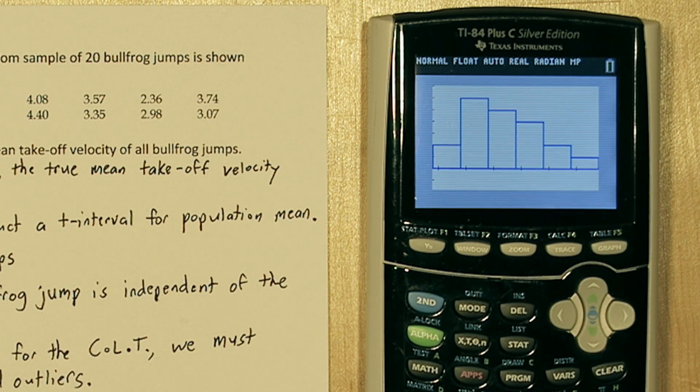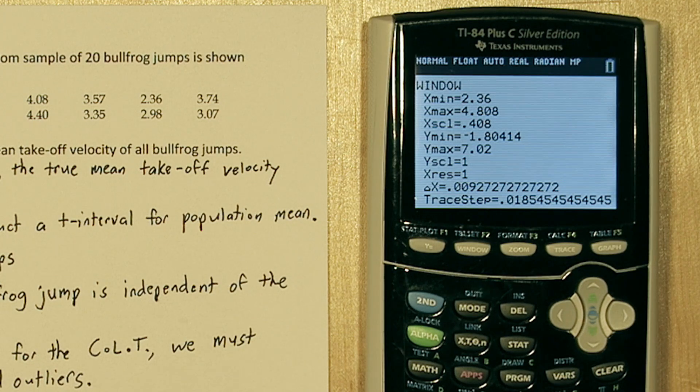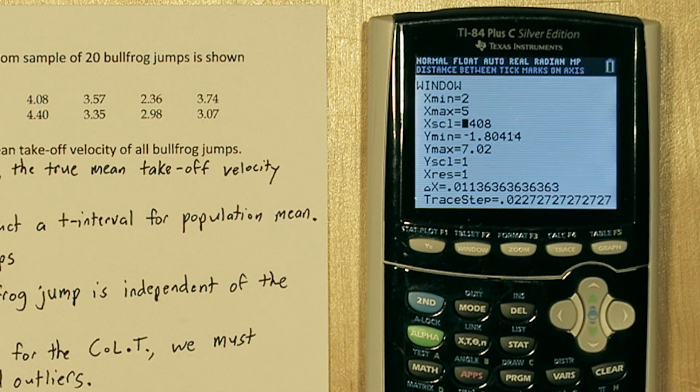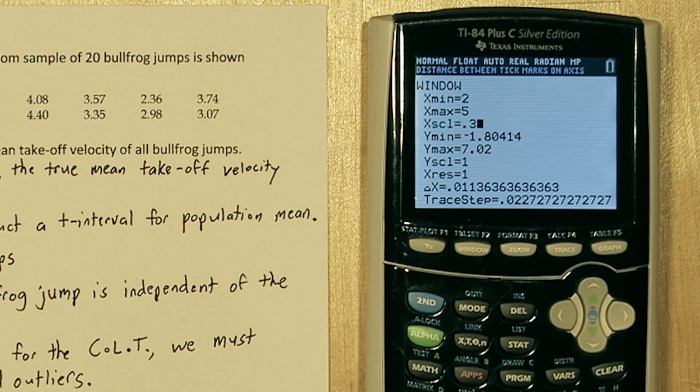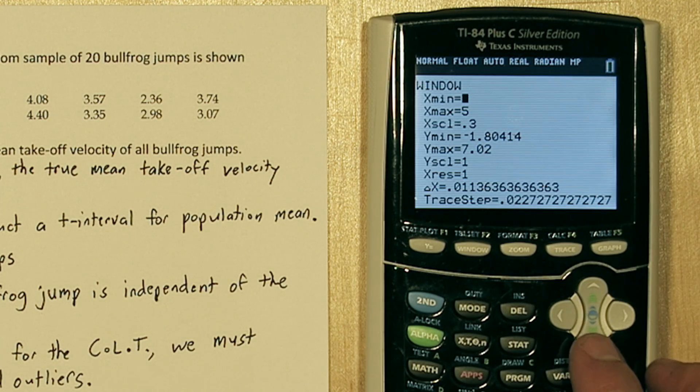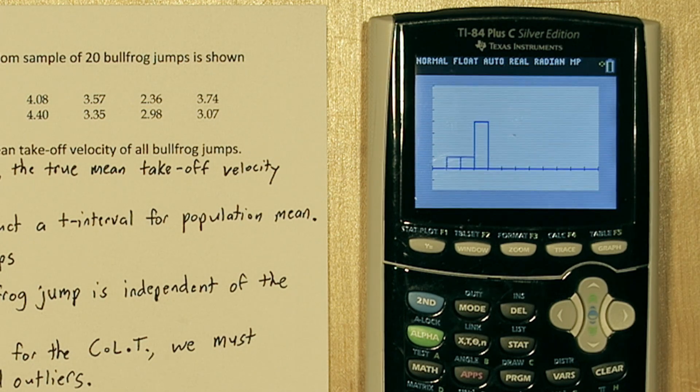I need to caution you here. These TI calculators tend to make things look right skewed when they're set to the default zoom 9, the zoom stat setting. Here's a better way to look at it. Press the window button, after pushing zoom 9 first, and change this to an integer, like 2, and the max to an integer as well. And let's actually change the x scale to about 0.3. Now when we push graph, the data doesn't look as skewed. I would explore a few different class sizes, which you can do by changing the x scale. I don't think there's strong skewness at all here.